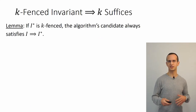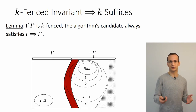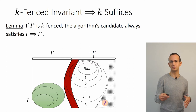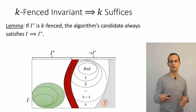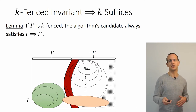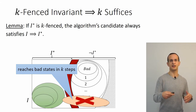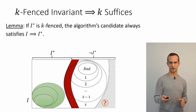The importance of the fence condition is that it constrains the candidate invariant the algorithm maintains. As the algorithm grows a candidate, this candidate always remains a subset of the k-fenced invariant. This is because if we try to include a state from outside the invariant, due to how generalization works, we also have to include a state from the boundary. But states in the boundary can reach a bad state in k steps per the fence condition, so the algorithm detects that and won't include that state.